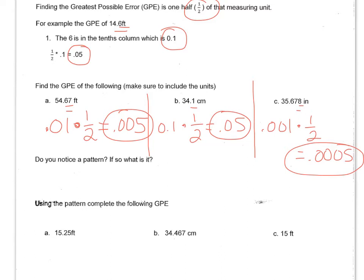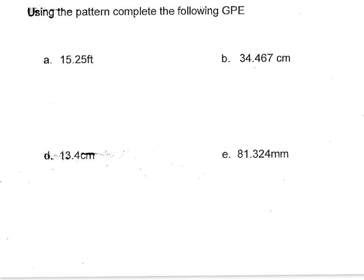In the next part, it asks if we notice a pattern. If you notice up here, there's two numbers after the decimal point — notice there's two zeros and then a five. In letter B, there's one number after the decimal point, and in the answer, there's one zero and then a five. Here, there's three numbers after the decimal point, so there's three zeros and then a five. So that's the pattern we use. However many numbers after the decimal point there are, that's how many zeros there are, and then you just put a five after it.